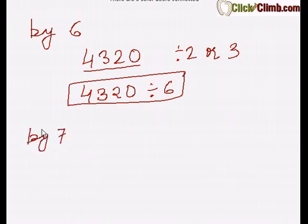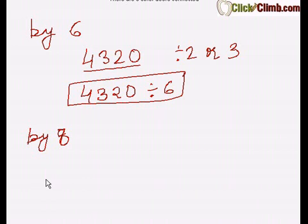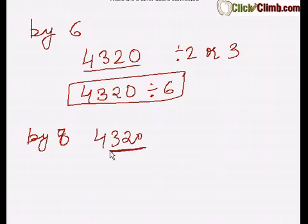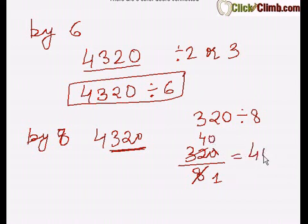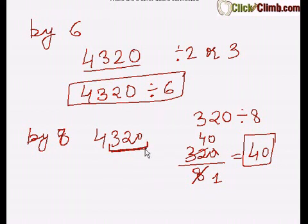Divisibility by 7 is not covered here. Moving on to divisibility by 8: a number is divisible by 8 if the number formed by its last three digits is divisible by 8. For 4320, the last three digits are 320. Since 320 ÷ 8 = 40 with no remainder, 4320 is divisible by 8.